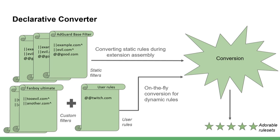Next, about our declarative converter. Inside our prototype, we have the declarative converter, which ensures a seamless transition of all our filtering rules accumulated over many years to the new declarative syntax. It is used in two places: first, during the preparation of static filters when building the extension; second, it performs on-the-fly conversion for user-defined rules and custom filters added by users. As a result, we obtain a set of static rule sets that are embedded into our extension, and one rule set assembled from dynamic rules.